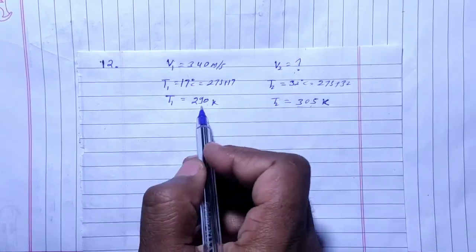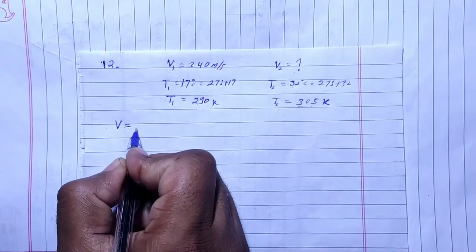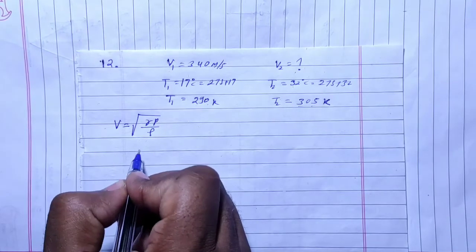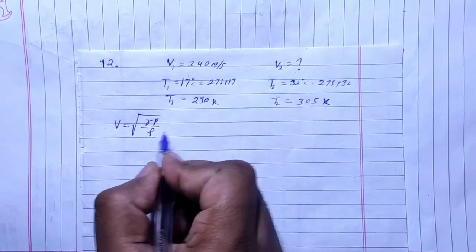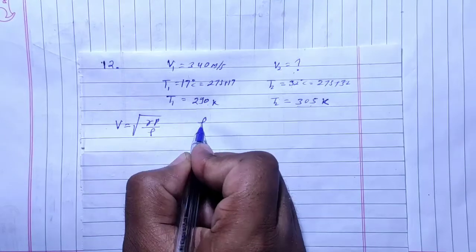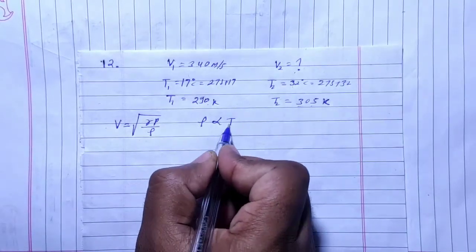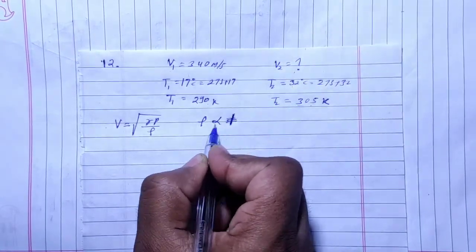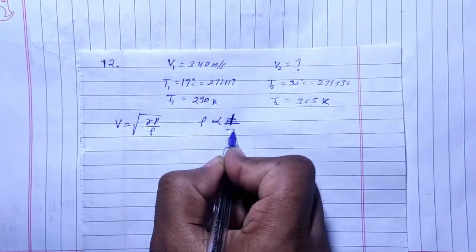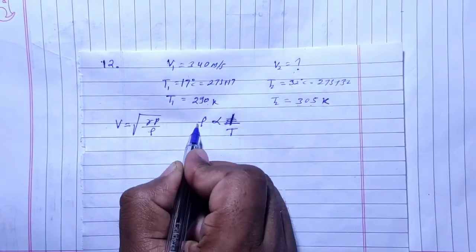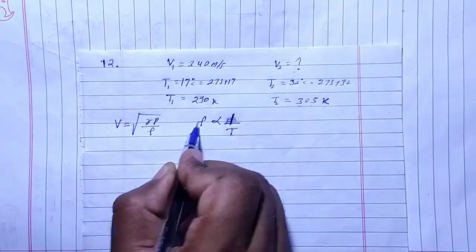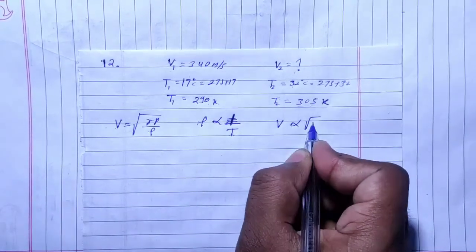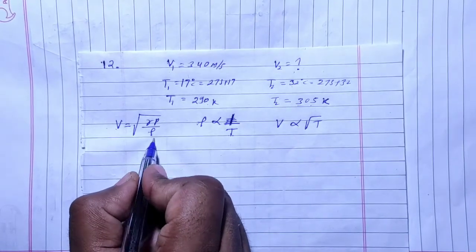First we have to find the relation between speed and temperature. Speed is equal to gamma p by rho. We also know that speed with density is inversely proportional, and velocity is related to temperature because this is inversely proportional to the root of density.